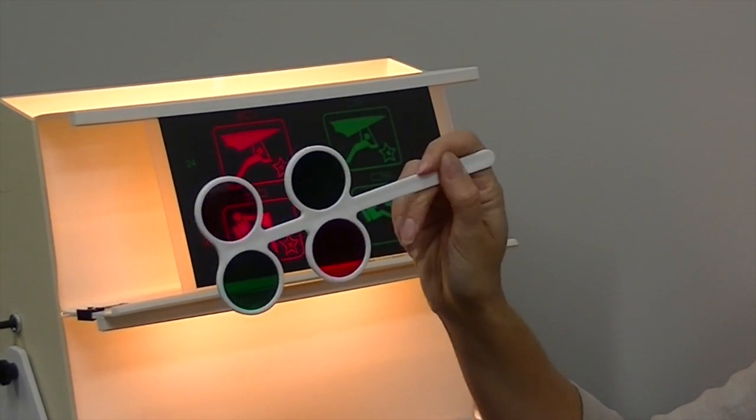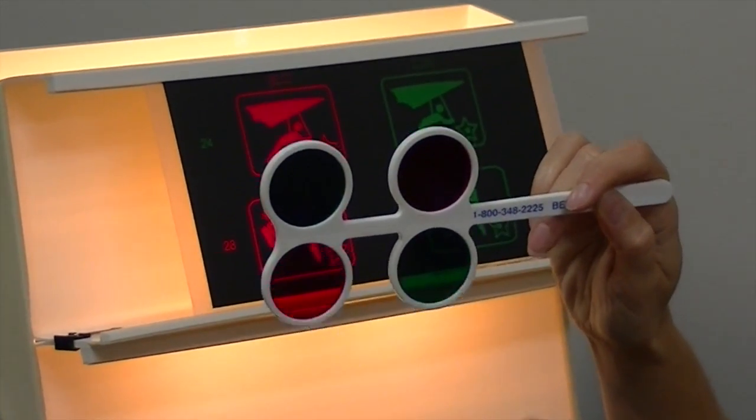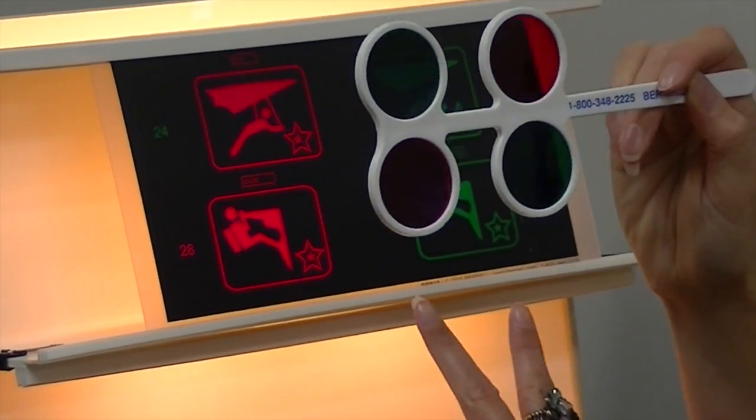What that does is one side causes us to converge or cross our eyes, the other one causes us to diverge our eyes in order to see this image as a single image.